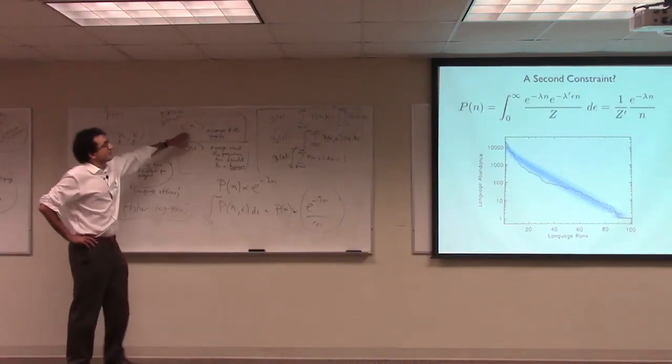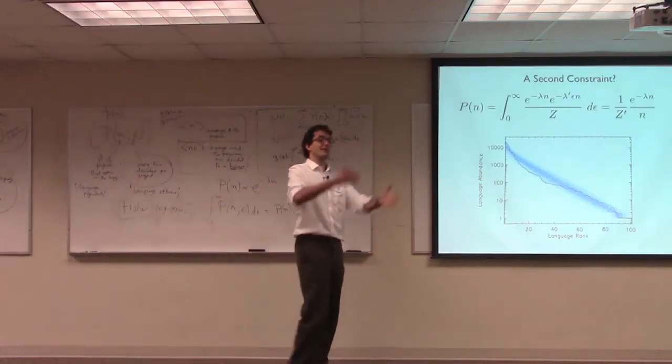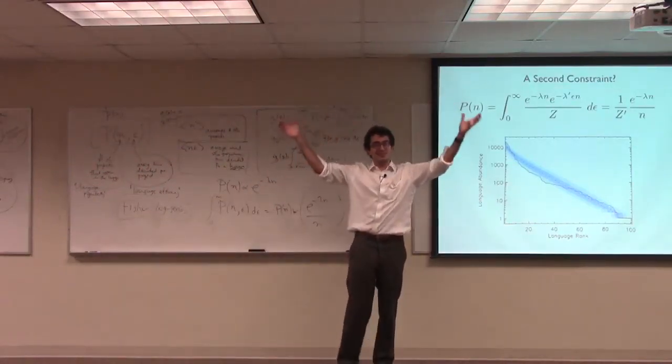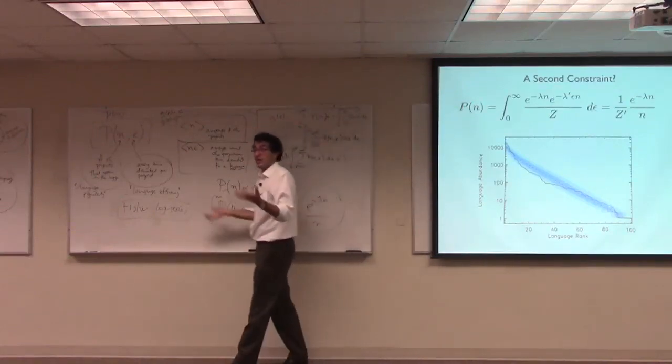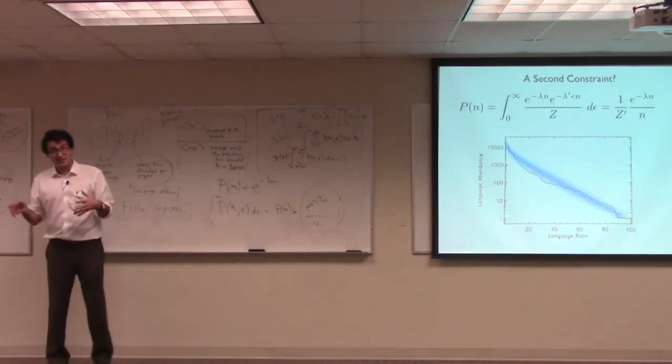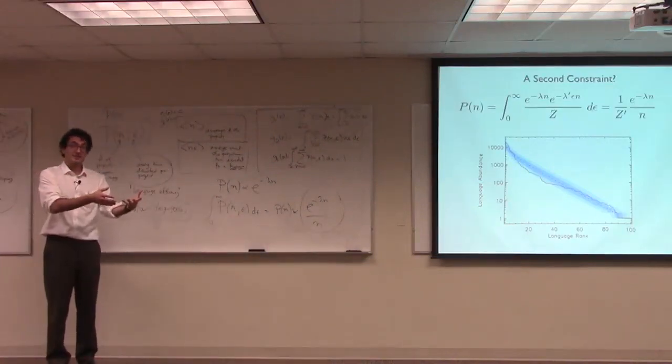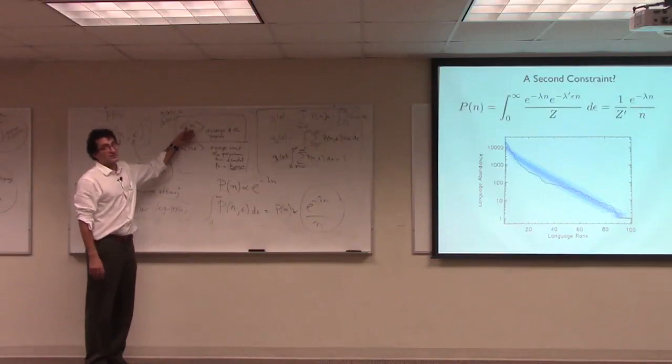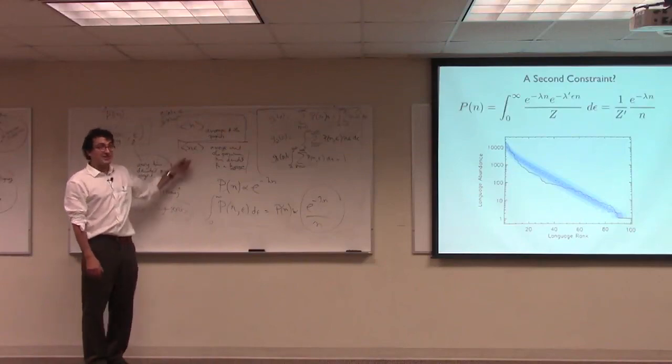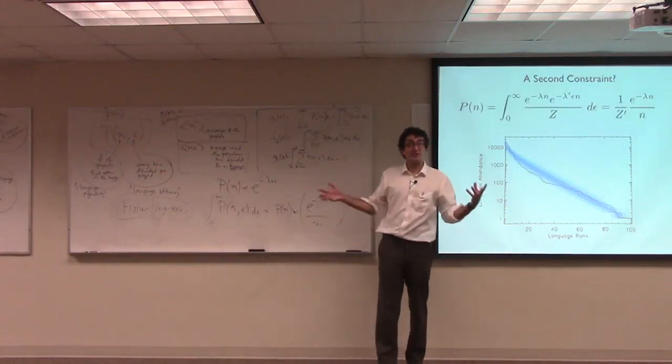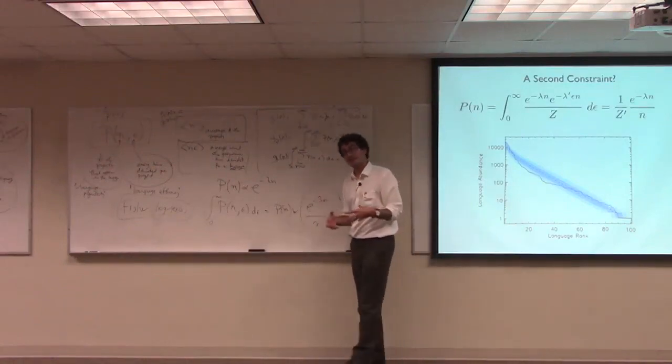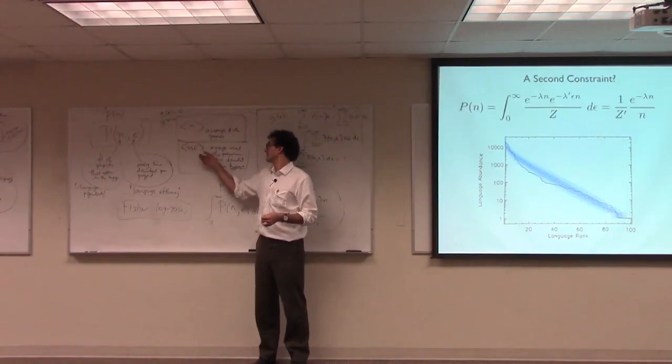The first constraint says that we're going to constrain the average number of projects. So the open source movement could do whatever it wants as long as it keeps the average number of projects per language fixed. People are making decisions. In fact, they're making decisions in a maximally disorganized way. That's the maximum entropy part of the assumption. So that they preserve this quantity here on average. And furthermore, the open source community, by whatever method, by whatever group cognitive method it's able to do this, and presumably by a whole lot of different interacting processes, also preserves the average amount of programmer time devoted to a particular language.